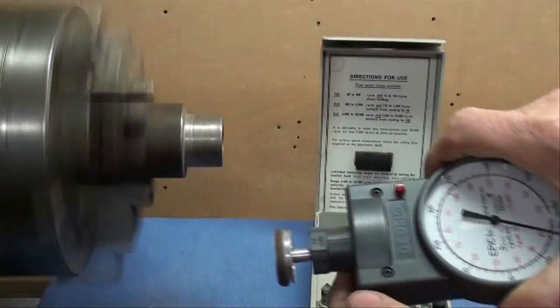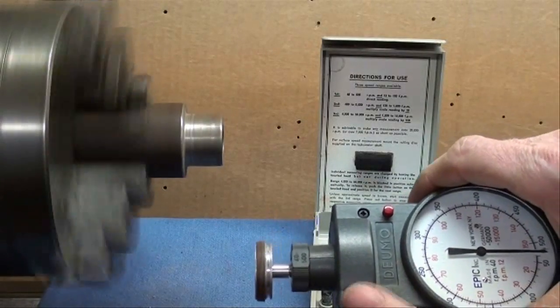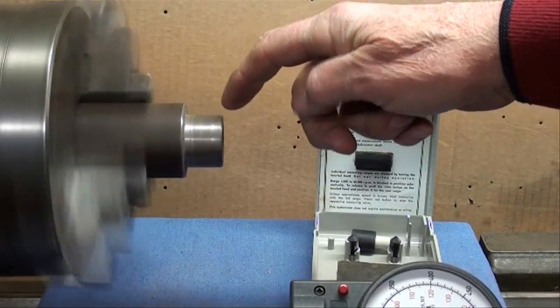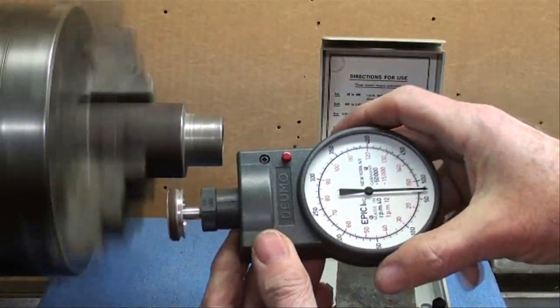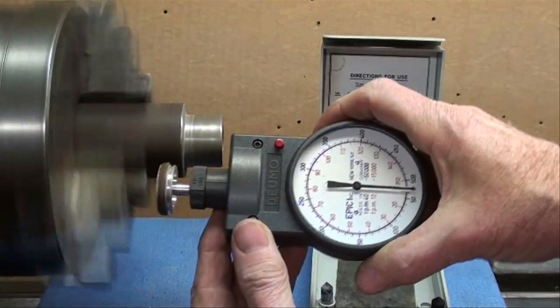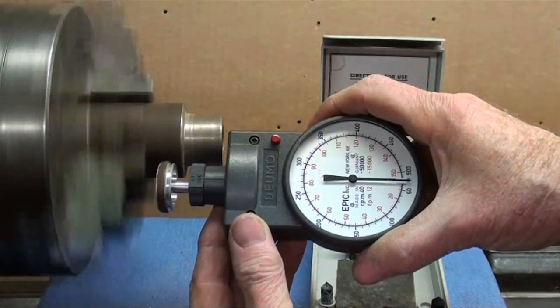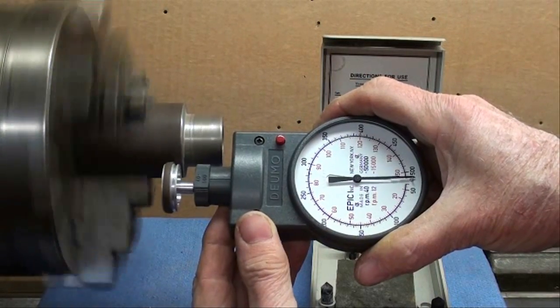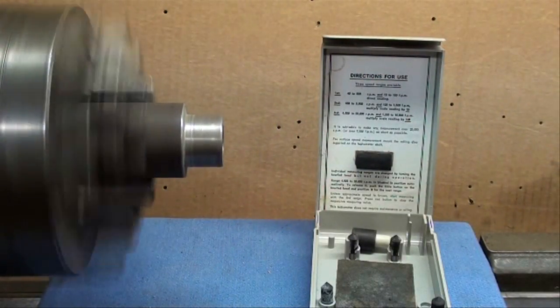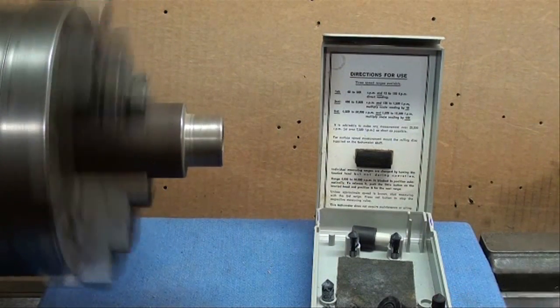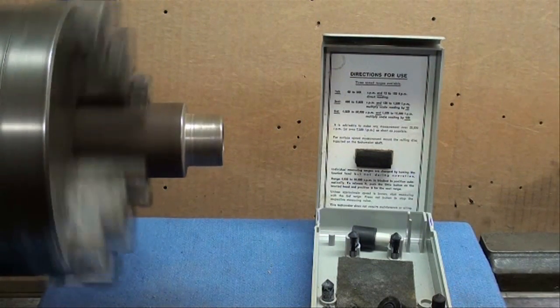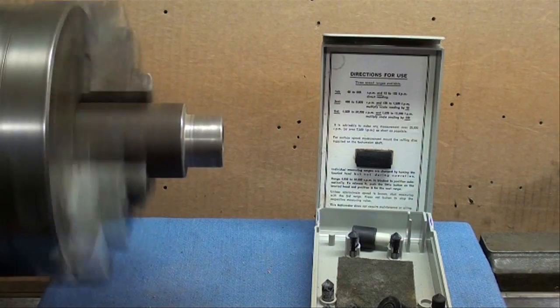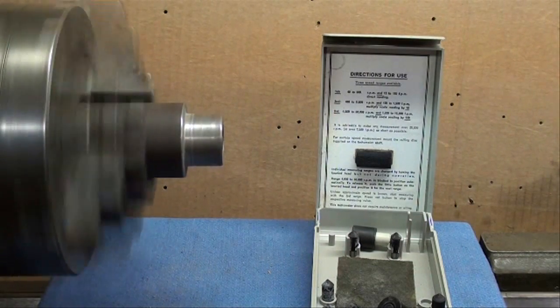However, as the diameter increases, watch how much the feet per minute increases. It almost pegs the needle at about 155 feet per minute. So you can see where you need to slow a machine down when you're cutting large diameters over small diameters.